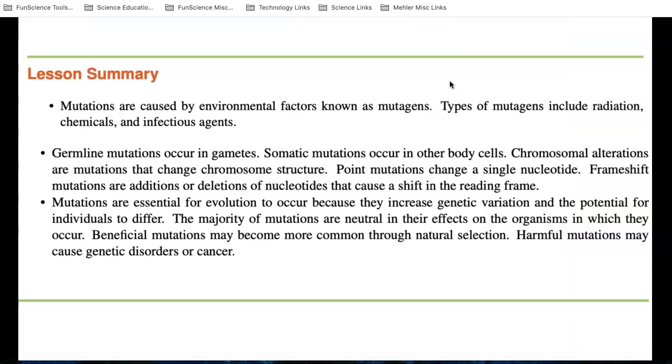Let's go over the lesson summary. Mutations are caused by environmental factors known as mutagens. Germline mutations occur in your sex cells. Somatic can be in any cell, and they can be caused by chromosomes changing or point mutations in a single letter, like A, C, T, or G. And mutations are essential, believe it or not, for evolution to occur because they increase genetic variation and the potential for individuals to differ. The majority of mutations are neutral. They have no effect on us whatsoever. Some are beneficial and some are harmful and can even cause genetic disorders or cancer.